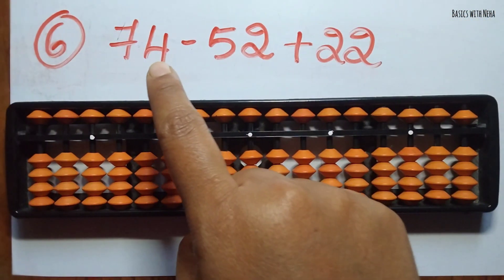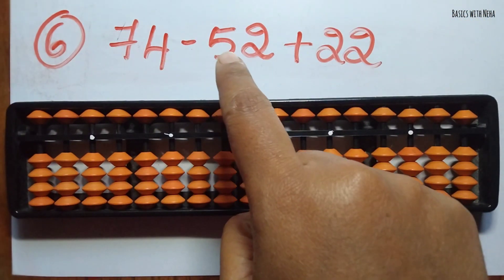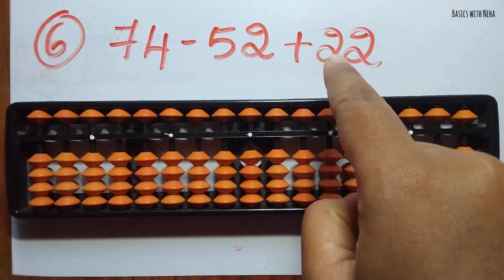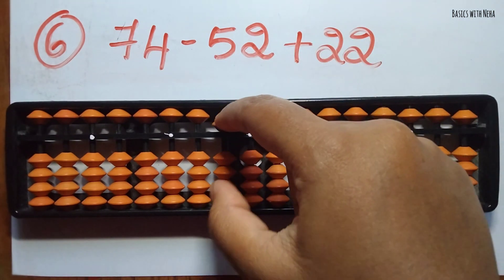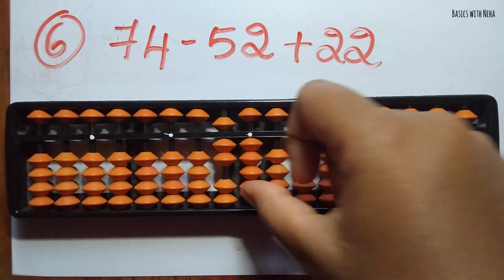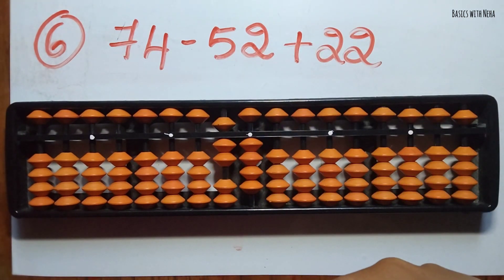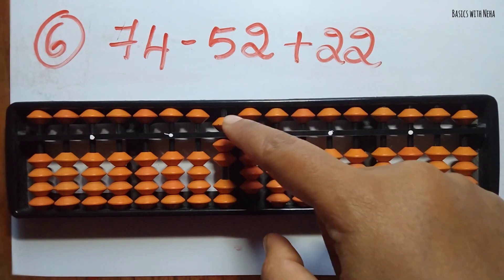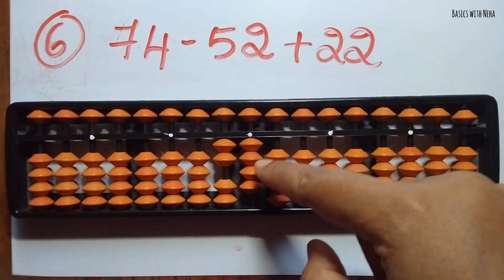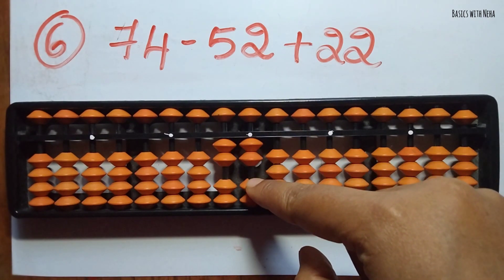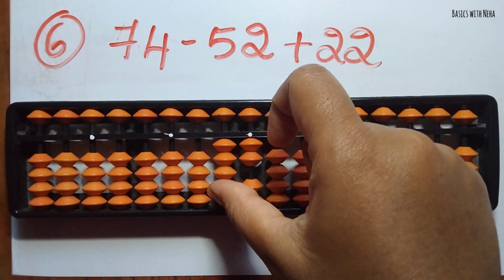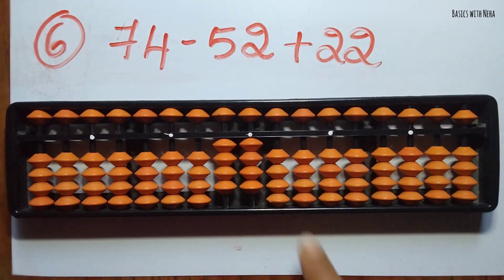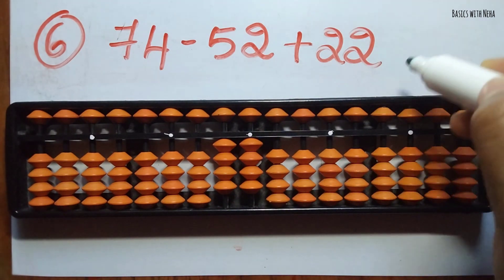The sixth question: 74 minus 52 plus 22. First take 74, now you should minus 52 — minus 5 in the 10's rod and minus 2 in the 1's rod. Now add 22 — add 2 in the 10's rod and 2 in the 1's rod. The answer is 44.